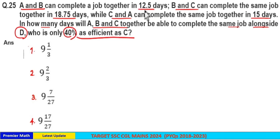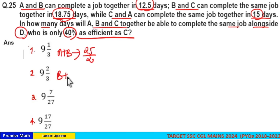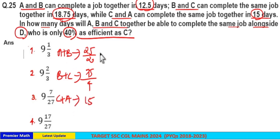Here we have to take the LCM of 12.5, 18.75, and 15. Write it in fraction: A and B complete the job in 25 by 2 days; B and C complete the job in 75 by 4 days; and C and A complete the job in 15 days. All are doing the same job, take the LCM. LCM is 75 into 2 is 150.